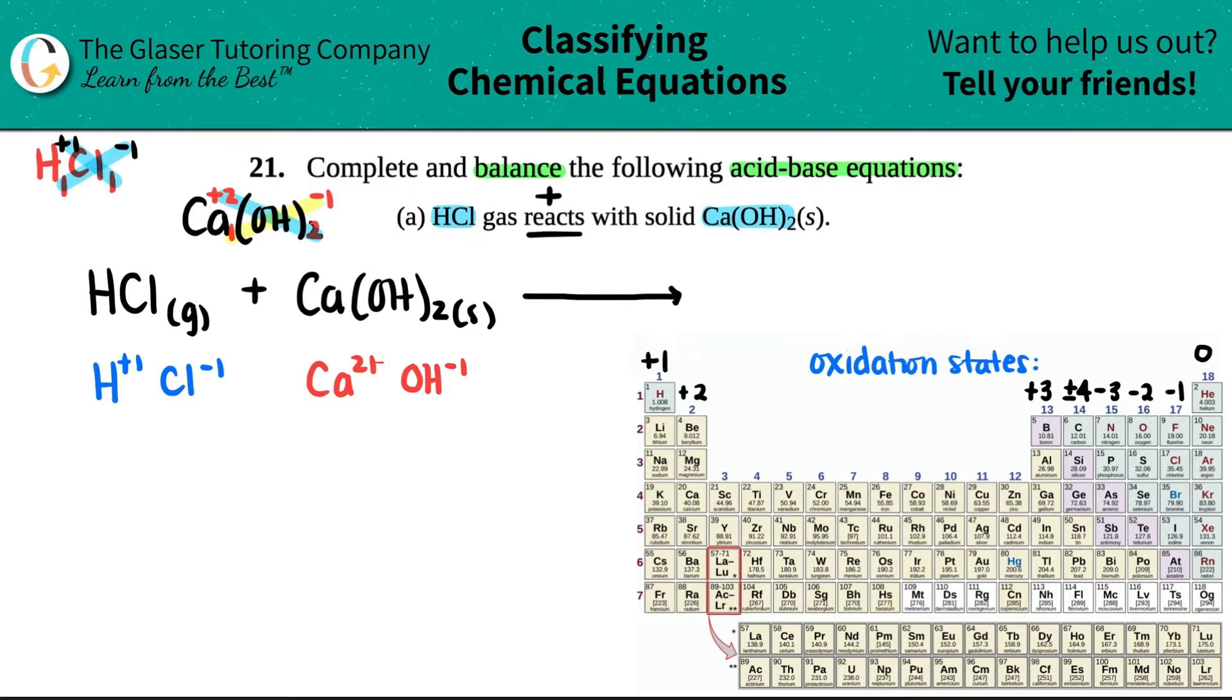So now this is what I mean by outers with outers, inners with inners. The outer atoms literally are going to hook up with the outer ones and the inner ones hook up with the inner ones. Look at that. Simple as that. When you get more comfortable with this, you could just look at it right here and say, H hooks up with OH, Cl hooks up with Ca. Outers with outers, inners with inners.